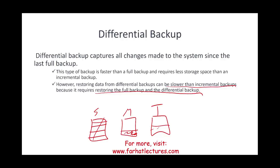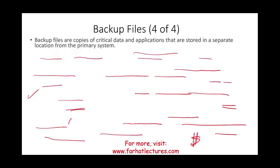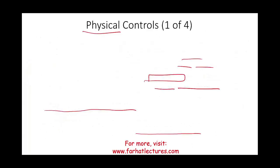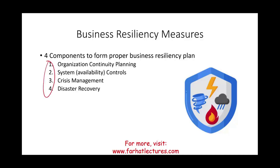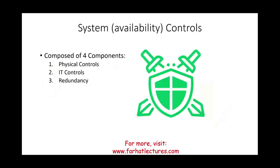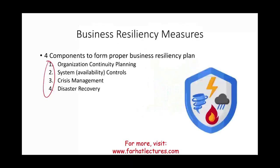In this session we covered the second component of business resiliency — system availability controls — composed of four components: physical controls, IT controls, redundancy, and backup files. In the next session we will look at the third component, crisis management. Business resiliency is a topic covered on the CPA exam because companies cannot afford to stay down for long. The full plan includes OCP, system availability controls, crisis management, and disaster recovery.